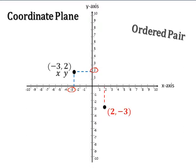The order of the pair of numbers is important. Notice that point negative 3, 2 is not the same point as 2, negative 3.